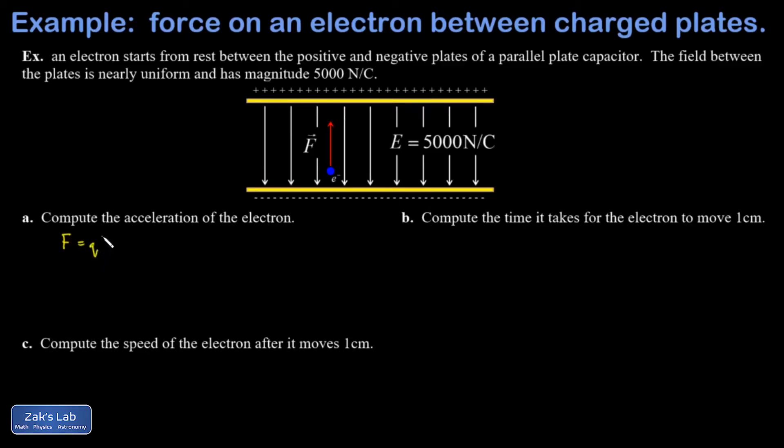That's just qE, the charge on the electron. I'm just working in magnitudes here because I already have a direction defined in my picture. The charge on the electron, the magnitude of it, is 1.6 times 10 to the negative 19 coulombs, and the strength of the electric field is 5000 newtons per coulomb. The coulombs are going to cancel out, and I get a force of 8 times 10 to the negative 16 newtons.